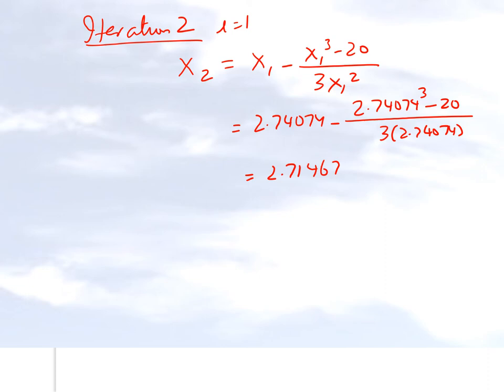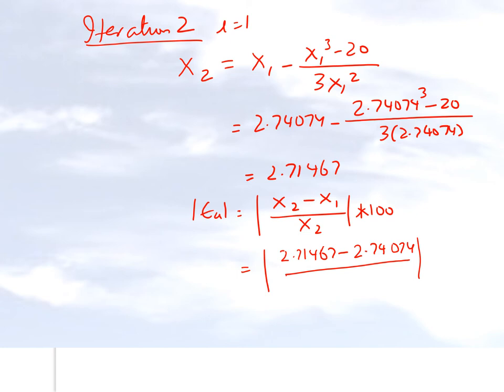Let's find out the absolute relative approximate errors. It will be the current approximation minus the previous approximation divided by the current approximation times 100 if we calculate in terms of percentages. So we get this is our current approximation, our previous approximation is this one, then we divide it by the current approximation.